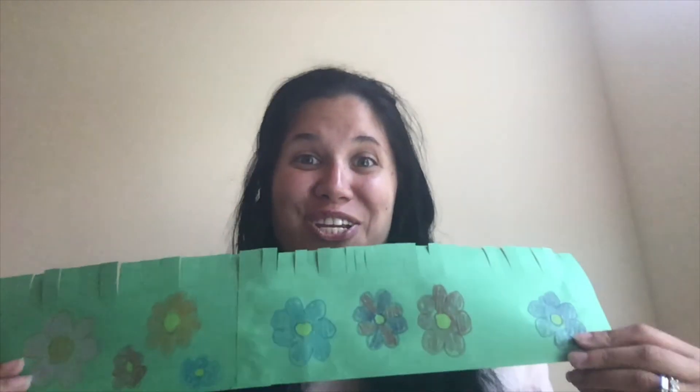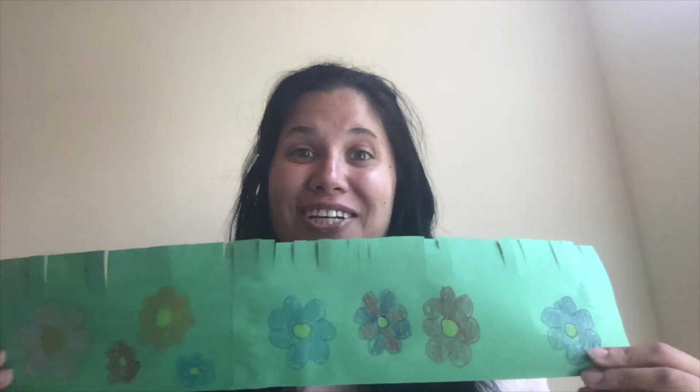Now that you've decorated your crown, the last step is to measure and glue. So you're going to probably need an adult to help you with this step. We're going to put the crown around your head. You want to make sure it's straight and you're going to find how tight you need to make it so that it'll stay on your head.